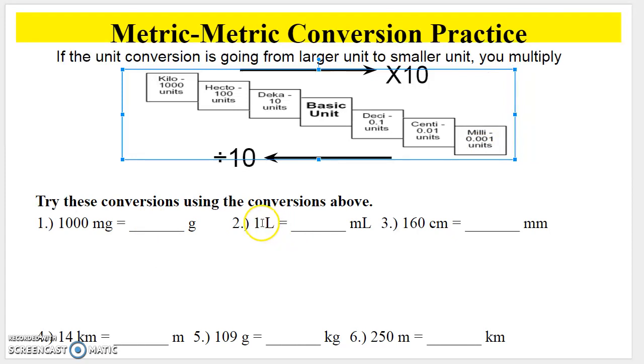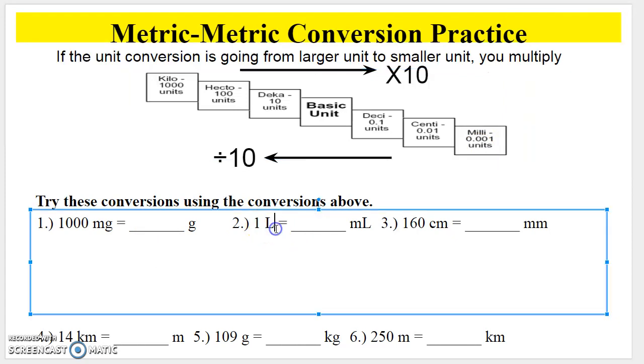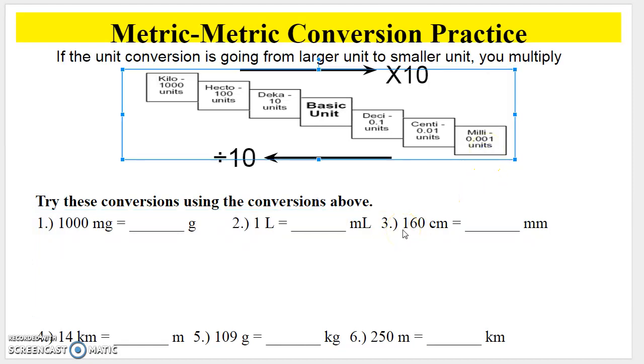For the second example, you have 1L. That should be a liter. Liters are your base unit. So you're starting off with 1 liter. And you want to compare that to milliliters. So you want to see how many milliliters that is. So in this case, you're moving 1, 2, 3 times to the right. And in this case, you're going to multiply by 10 each time. So again, I take 1 times 10 once. Whatever you get there, you multiply it times 10 again. And finally, multiplying it times 10 again, which would give you a value of 1,000. So 1 liter is equal to 1,000 milliliters.